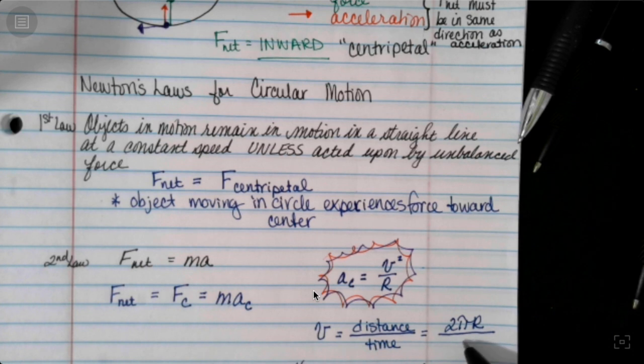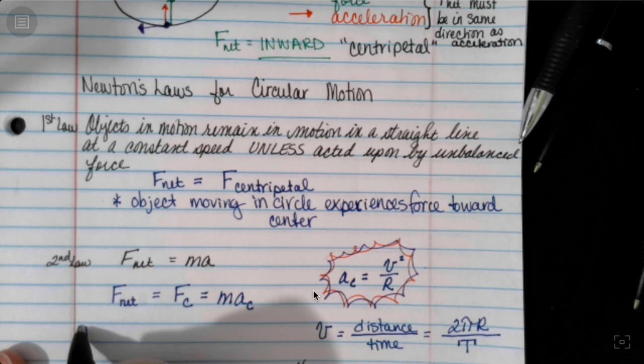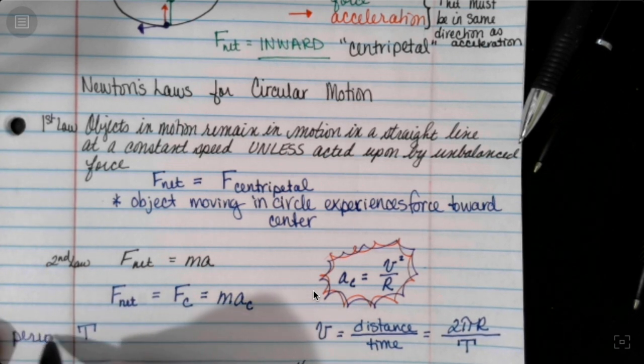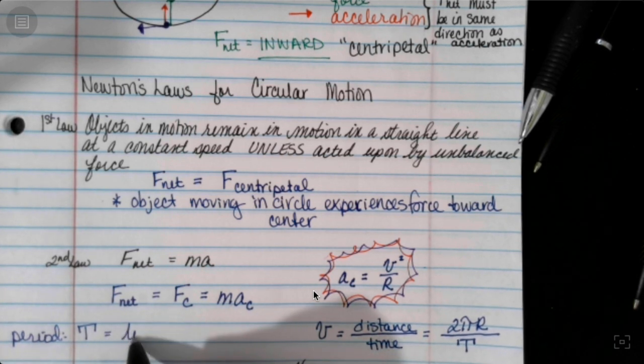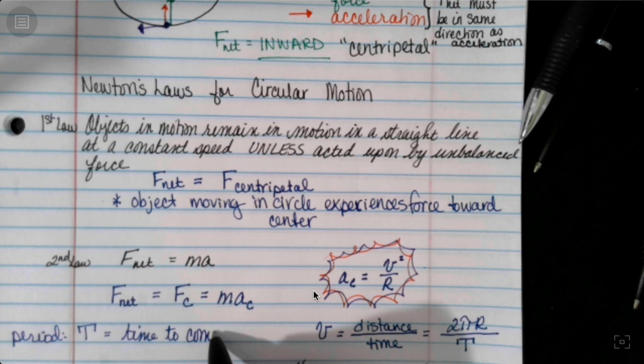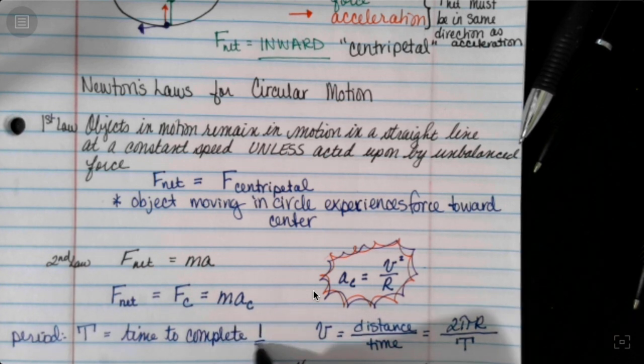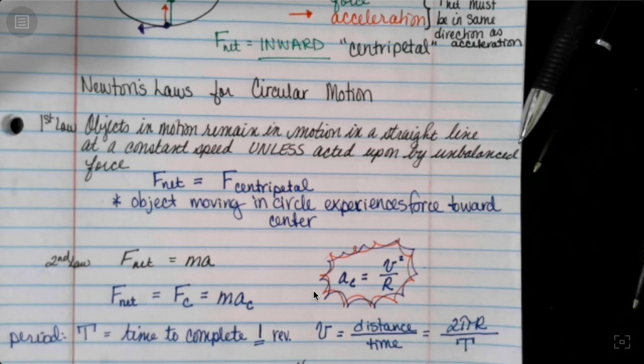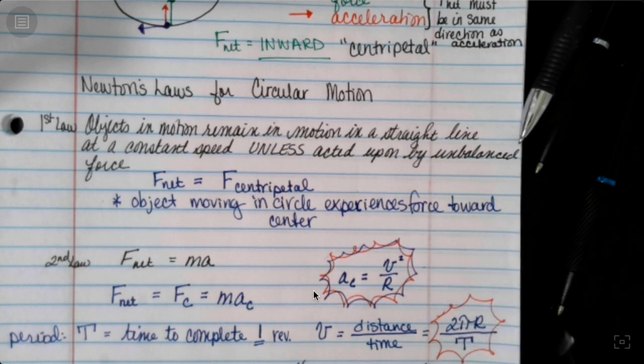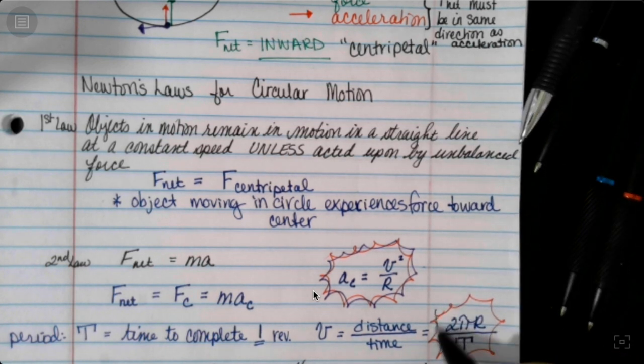The time that it takes to go around, we need to define as the period. So the period tau is the time to complete one revolution. Our 2 pi r over tau is velocity, is an equation from our equation sheet. So we're good there.